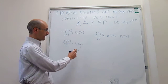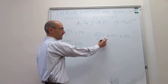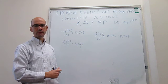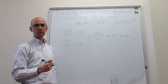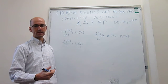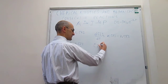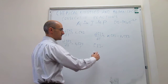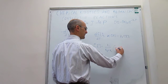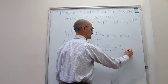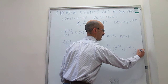To obtain the explicit dependence of the concentration of I on time, we would need to integrate this differential expression. That integration is a little more difficult than what we are used to, so we are just going to write the solution. After integration, the concentration of I equals K1 over (K2 minus K1), times (e to the minus K1·t minus e to the minus K2·t), multiplied by the initial concentration of A.